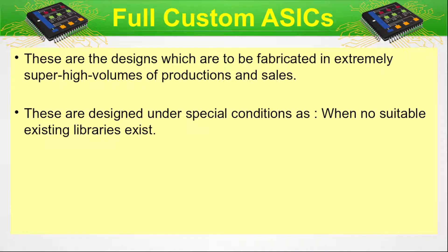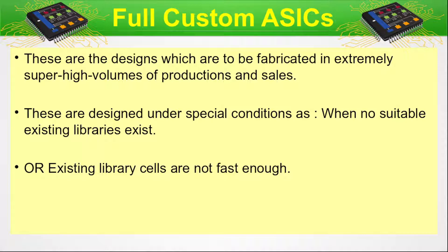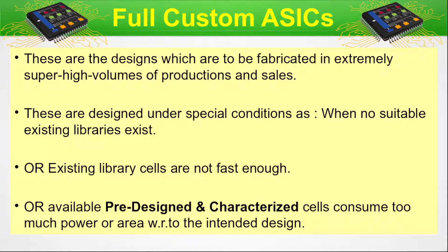These are designed under special conditions when no suitable existing libraries exist — meaning we do not have any pre-designed cells for them. Or existing library cells are not fast enough and cannot reach the required speed. Or available pre-designed and characterized cells consume too much power or area with respect to the intended design, meaning we are not meeting the power and area criteria.